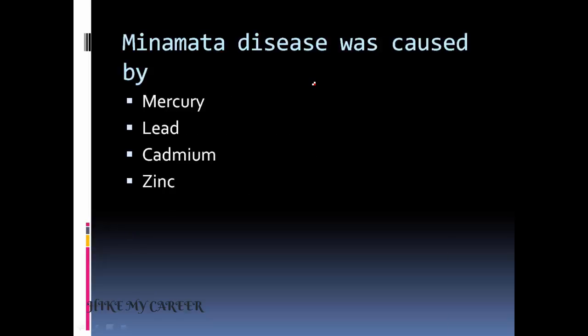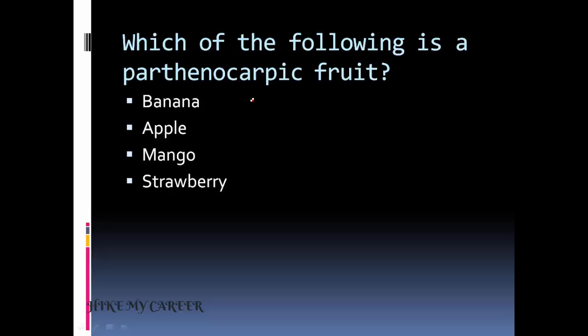Next question: Minamata disease was caused by - option one: mercury, option two: lead, option three: cadmium, option four: zinc. Answer is mercury. Next question: which of the following is a parthenocarpic fruit? Option one: banana, option two: apple, option three: mango, option four: strawberry. Answer is banana.